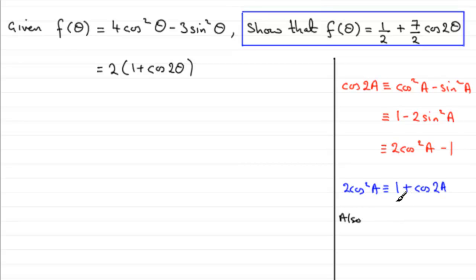We've got that 2 sine squared a, if we add it to both sides, 2 sine squared a is identical to, and if we take cos 2a from both sides, we get 1 minus cos 2a. So if we now divide through by 2, you end up with sine squared a is identical to 1 half minus 1 half cos 2a.